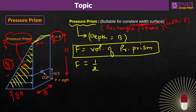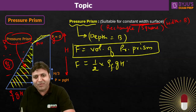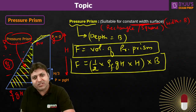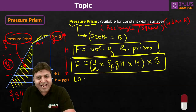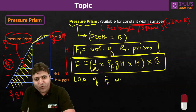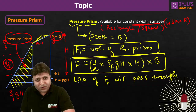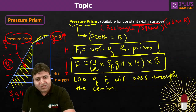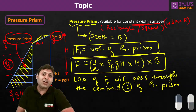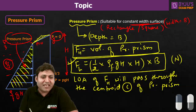What is the volume? Volume is half into base, where base equals rho_F into g into H, and height equals H, multiplied by the depth B. That gives the hydrostatic force. Also, the line of action of this hydrostatic force will pass through the centroid of the pressure prism. So we can find out both the hydrostatic force and its point of application.